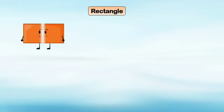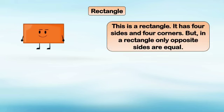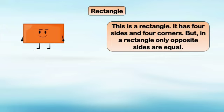Our next shape is rectangle. This is a rectangle. It has four sides and four corners — one, two, three, four. In a rectangle, only opposite sides are equal.